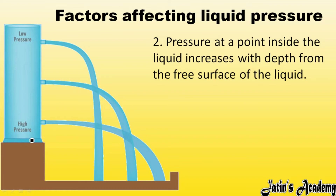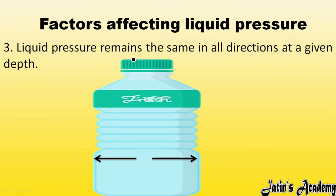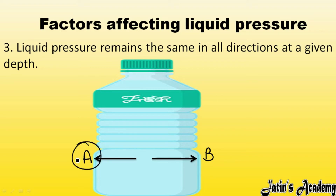Liquid pressure remains the same in all directions at a given depth. For example, in a container of water, at two points A and B at the same level, the same amount of liquid pressure is exerted. It is not the case that point A has more and point B has less — at the same depth, liquid pressure is the same.